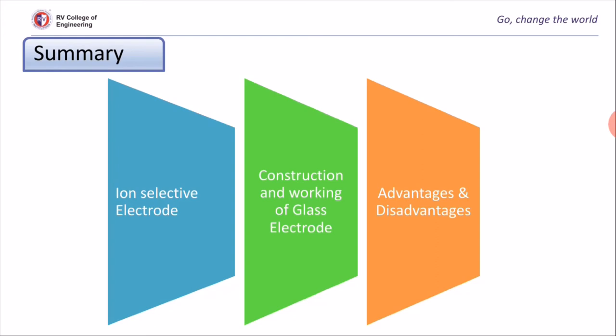Summary. In today's class, we learned about ion selective electrodes, construction and working of glass electrode, its advantages and disadvantages, and measurement of pH of unknown solution using glass electrode.